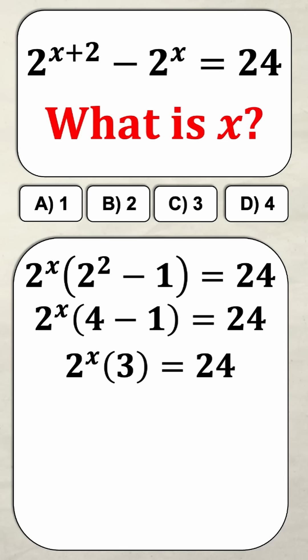Next I want to divide both sides by 3 that's going to give me 2 to the power of x is equal to 8. Now I want both sides of the equal sign to have a common base so I'm going to write the right hand side as a base 2.